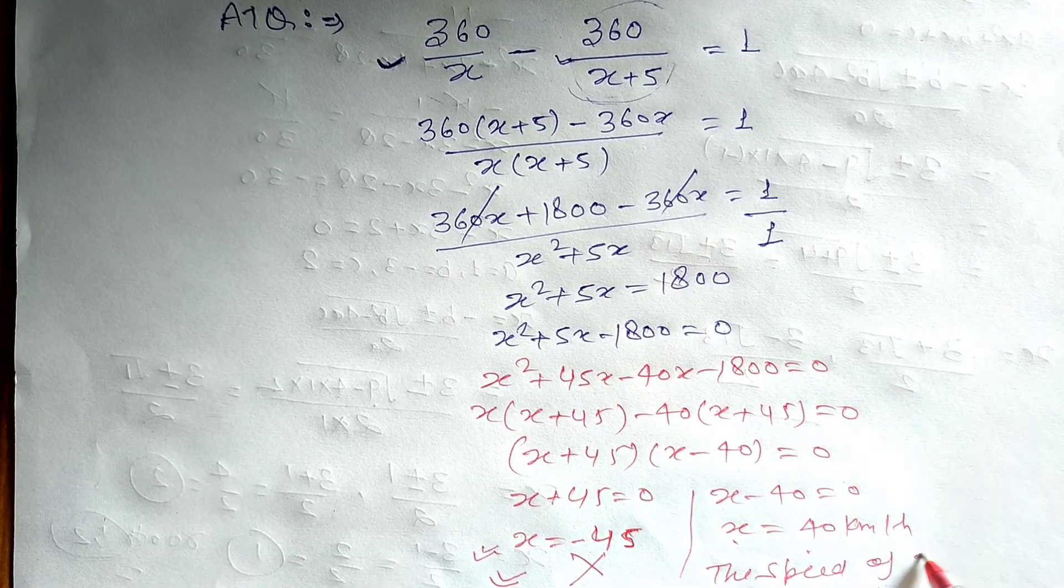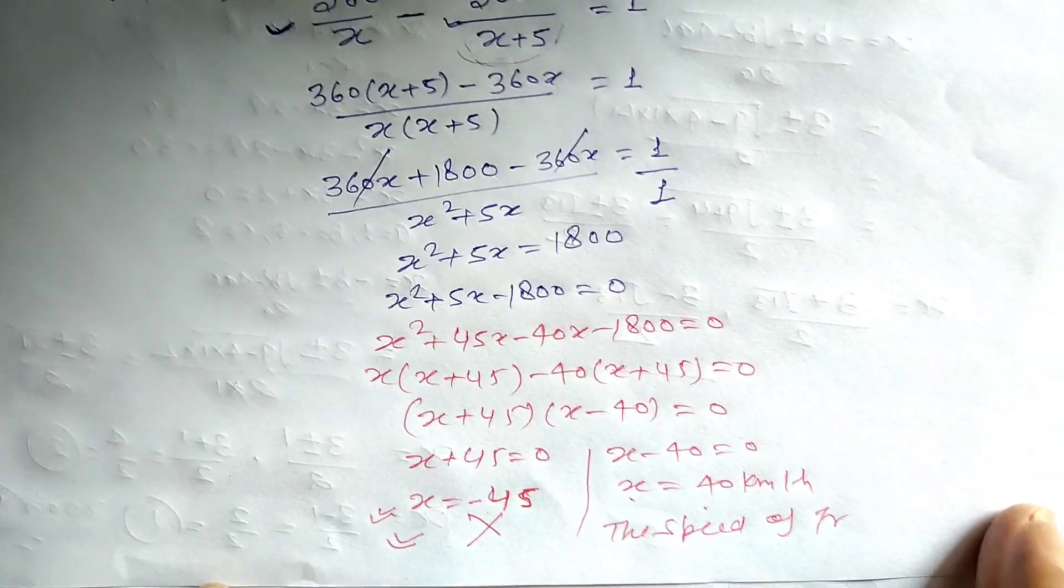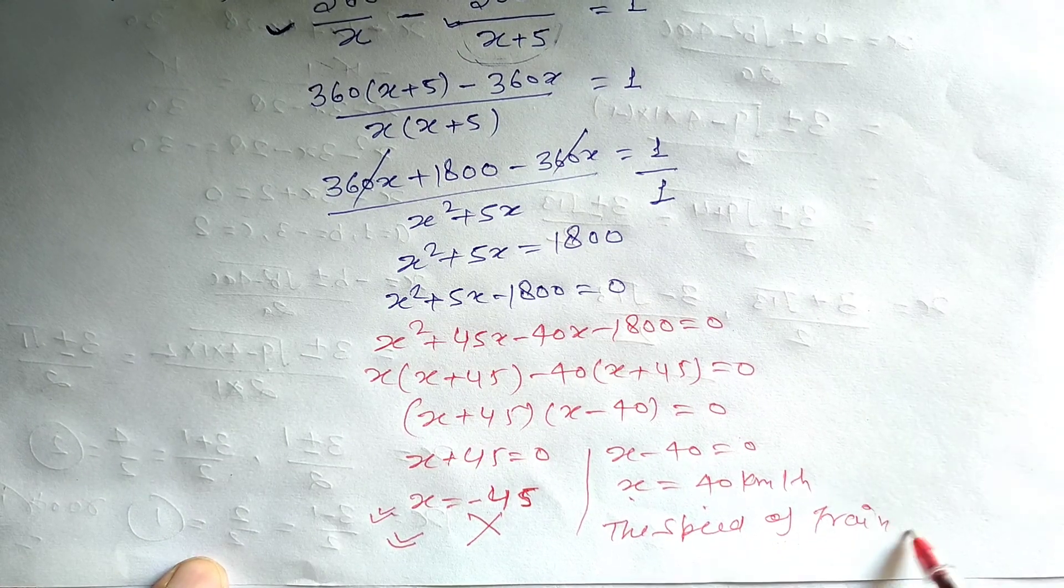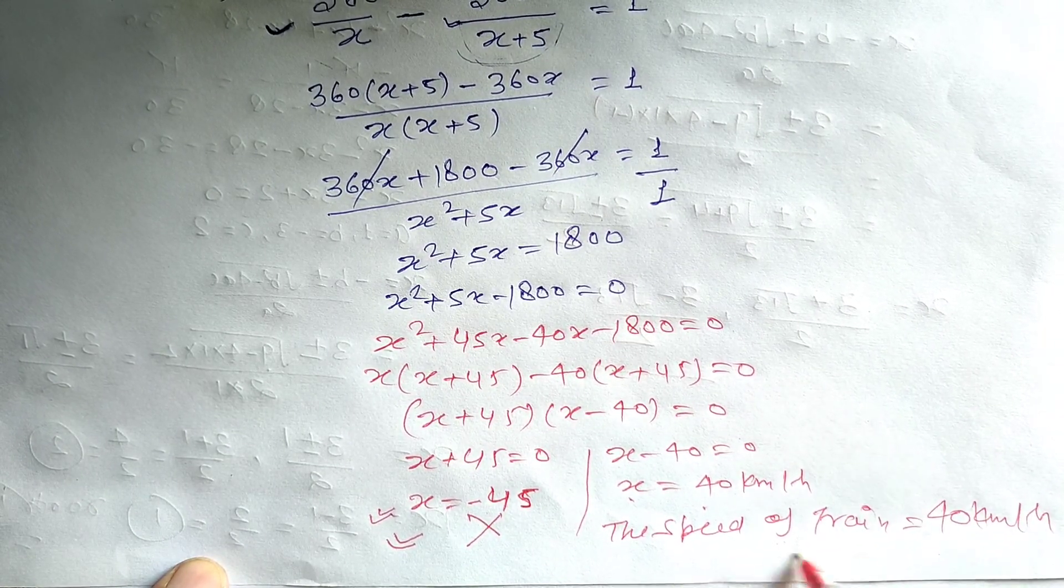Speed of train: the speed of train 40 km per hour.